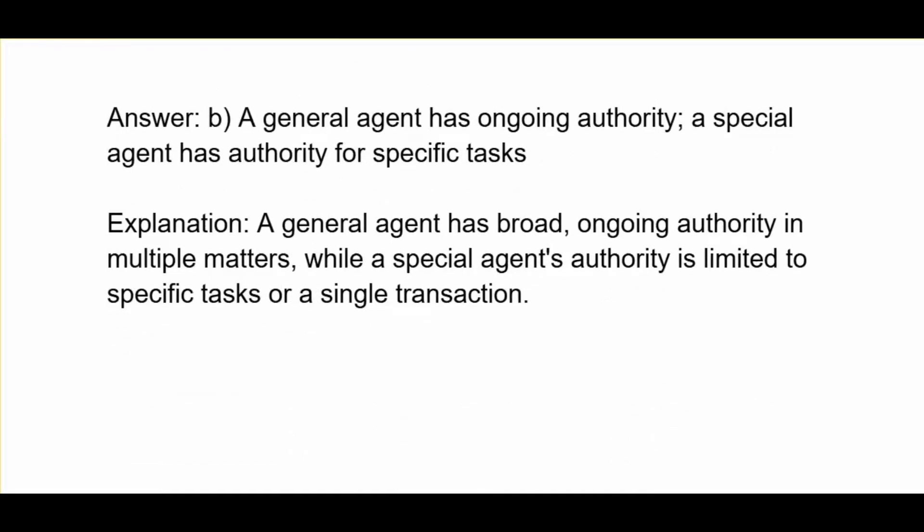B. A general agent has ongoing authority; a special agent has authority for specific tasks. A general agent has broad, ongoing authority in multiple matters while a special agent's authority is limited to specific tasks for a single transaction.